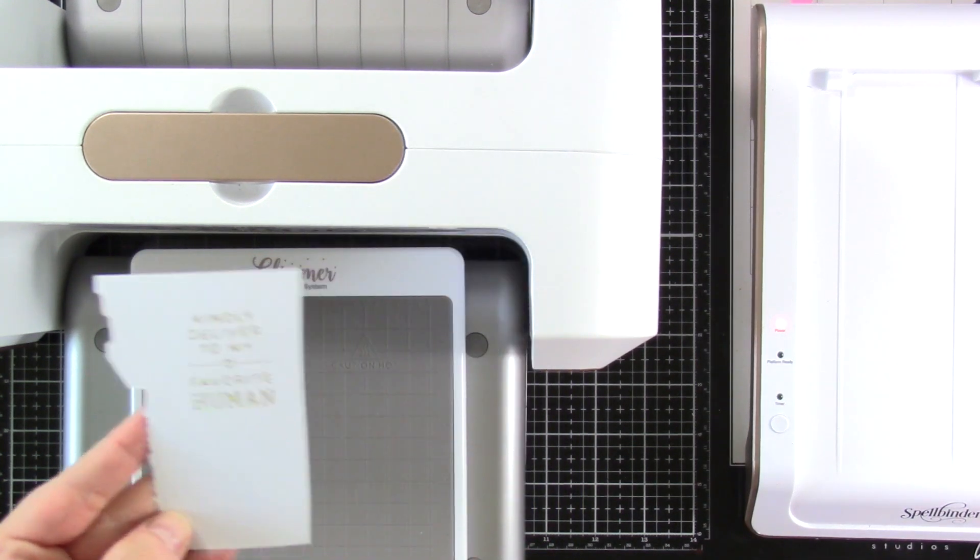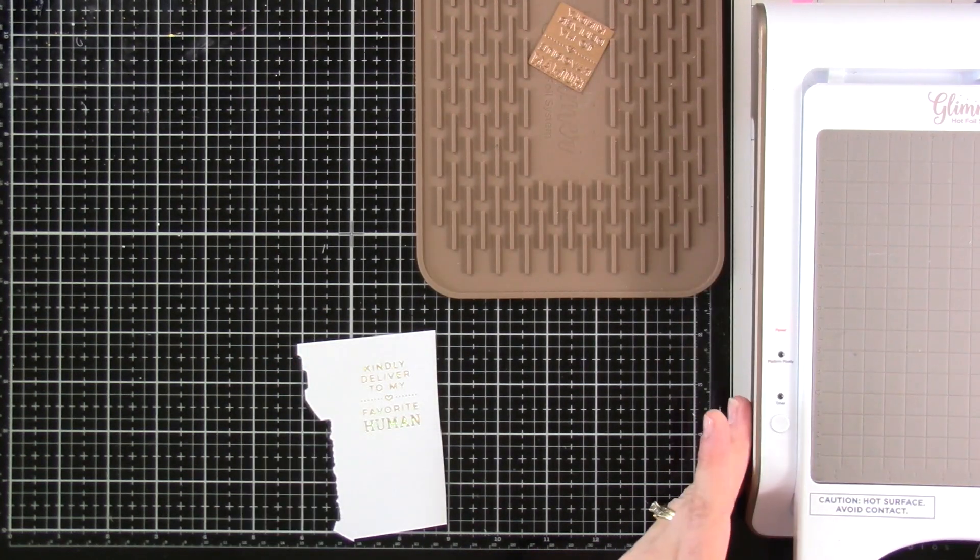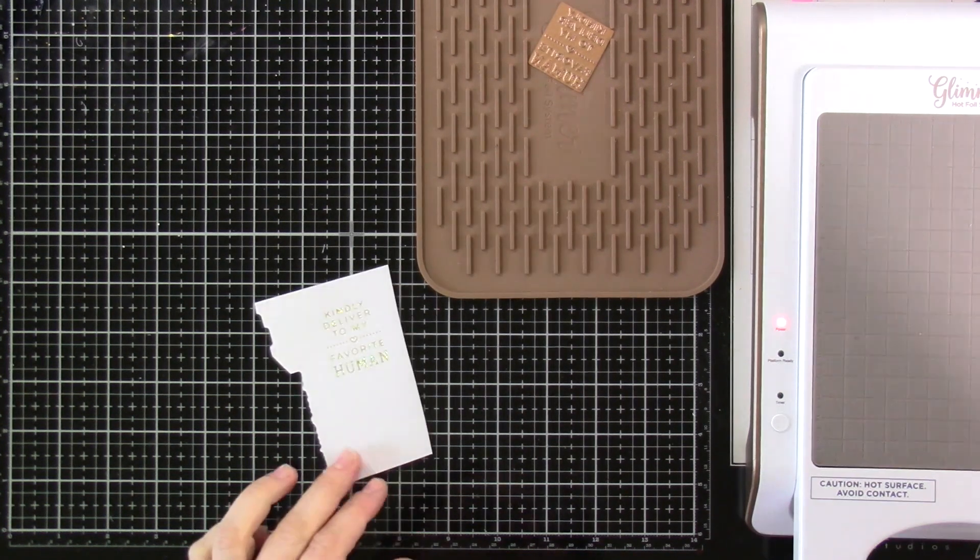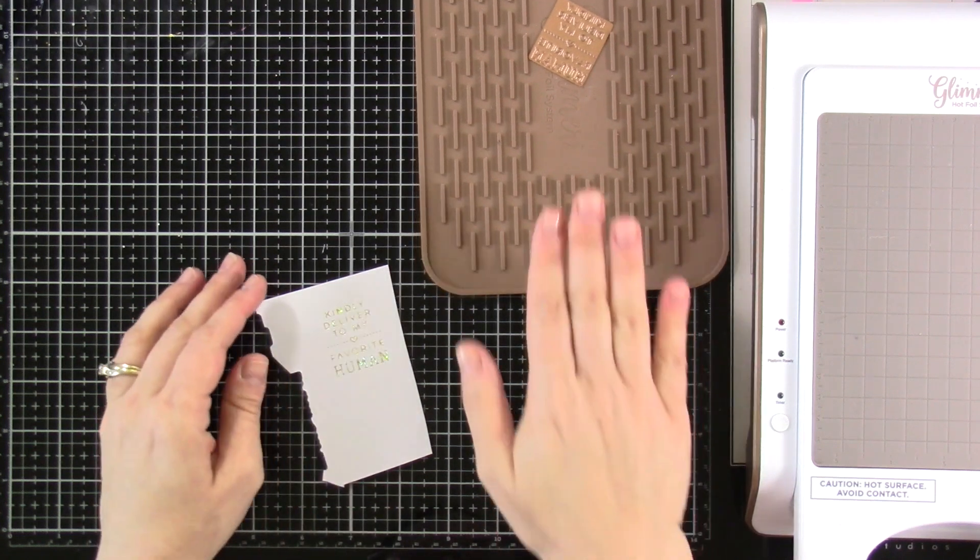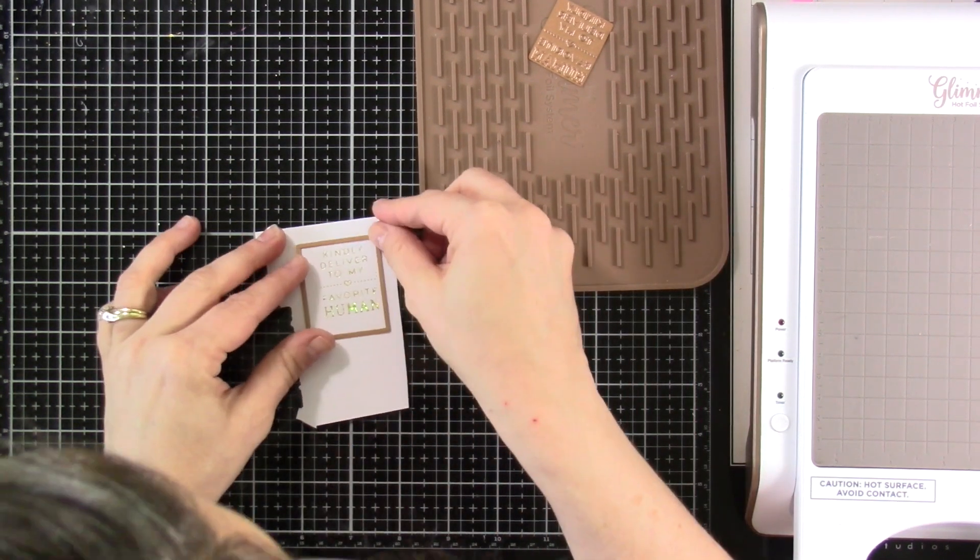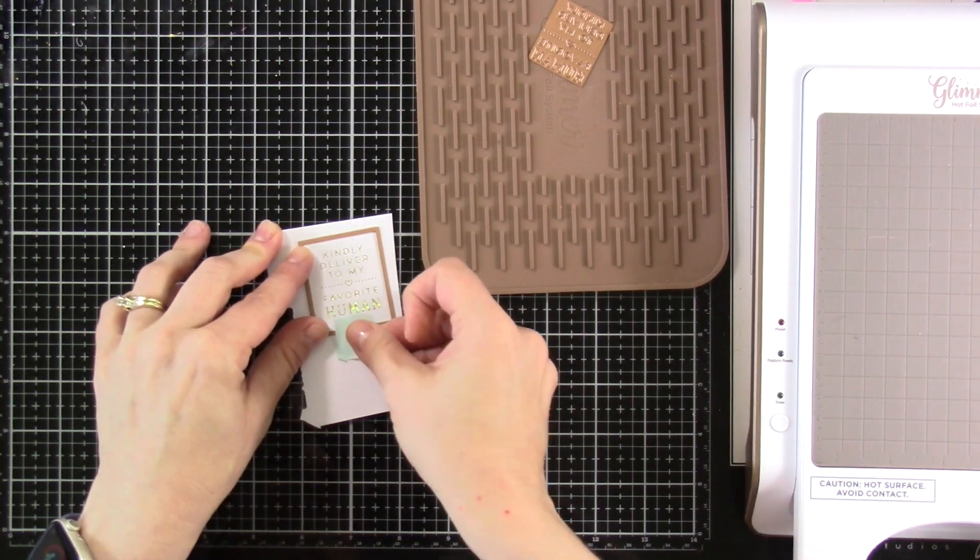So now I am going to turn off everything. I'm done with my foil system, but I'll use my magnetic piece, pull off my plate so that it can get cool. So I can put that away, turn off my machine. It's going to take a little while to cool down. And then I'm going to bring in that die that I showed you earlier. And we're going to die cut out our sentiment.